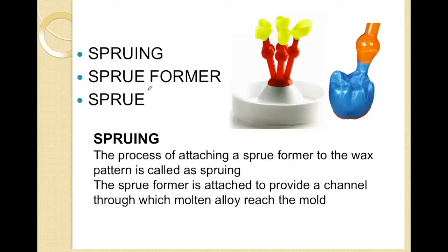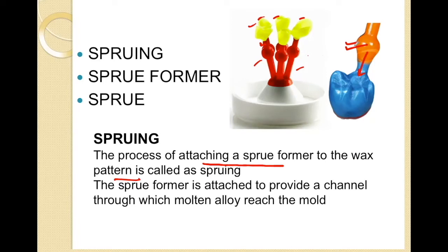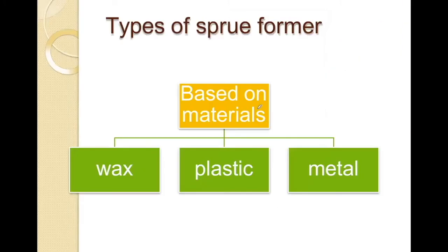Sprueing is the process of attachment of the sprue former to the wax pattern. This is our wax pattern and these are the sprue formers. The sprue former provides the channel through which the molten metal will flow into the prepared mold. The reservoir acts as a pool of molten metal to compensate for metal shrinkage which occurs during solidification. These sprue formers can be made up of wax, plastic, and metal.